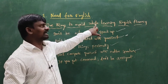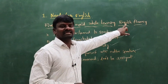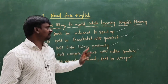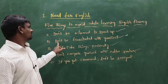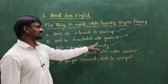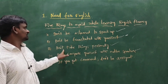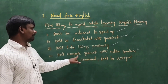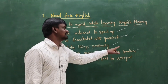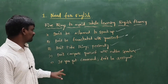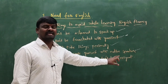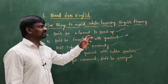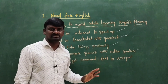The five things to avoid while learning English language: number one, don't be ashamed to speak up; number two, don't be frustrated with yourself; number three, don't take things personally; number four, don't compare yourself with native speakers; number five, if you get command, don't be arrogant. These are the five things to avoid while learning English fluency.